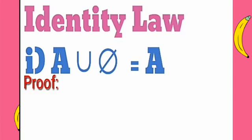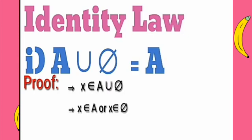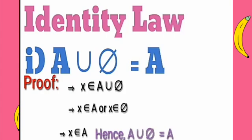Let x be an element of A union ∅. That means x belongs to A or x belongs to ∅, where ∅ is an empty set. So we can write it as x belongs to A. Hence it is proved that A union ∅ is equal to A.